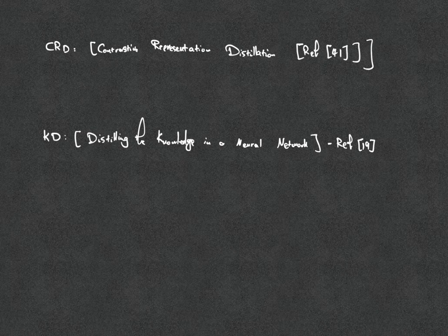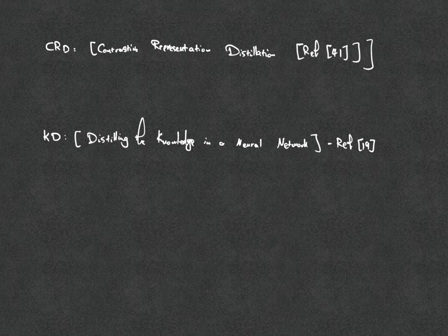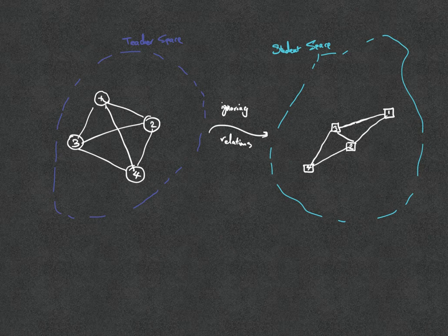That work is similar to this paper in that they are trying to maximize the lower bound of mutual information — but in that work, the mutual information is computed between teacher representations and student representations. Whereas in the paper we are discussing today, this mutual information is computed between the distribution of anchor-student relations and the corresponding anchor-teacher relations. In addition to individual representations of data points, preserving the relationships is also an important criterion in order to have generalizable representations for the tasks at hand.